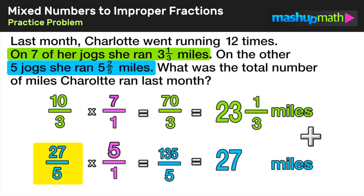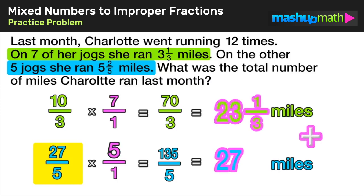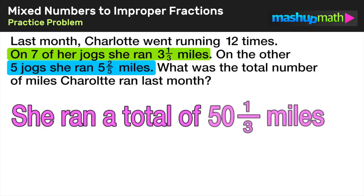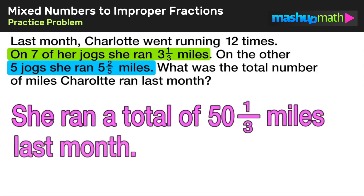To summarize: on her seven jogs of three and one-third miles, the total was twenty-three and one-third miles. On the other five jogs of five and two-fifths miles, the total was twenty-seven miles. Adding those two values together gives us the total number of miles she ran last month: fifty and one-third miles. We have solved this problem.